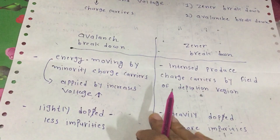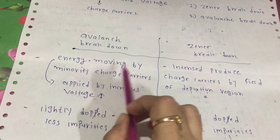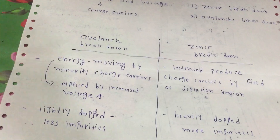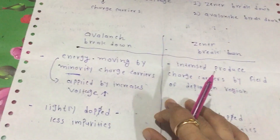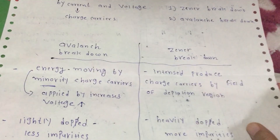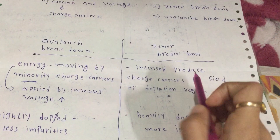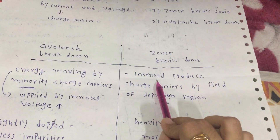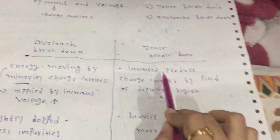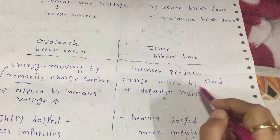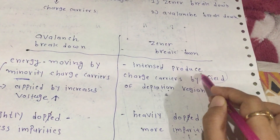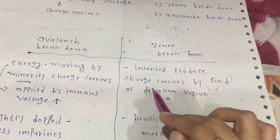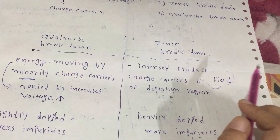In avalanche breakdown, energy comes from increasing voltage — when voltage increases, energy increases, and this energy moves the minority charge carriers, breaking the junction and causing current to flow. In zener breakdown, intense charge carriers are produced by heavy doping, and because of the strong electric field in the depletion region, the field breaks down and charge carriers — holes and electrons — bond together, causing current to flow.